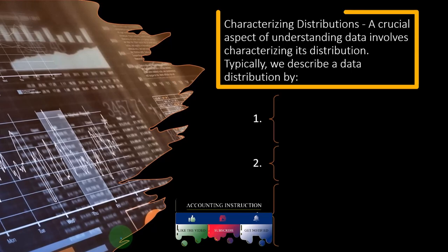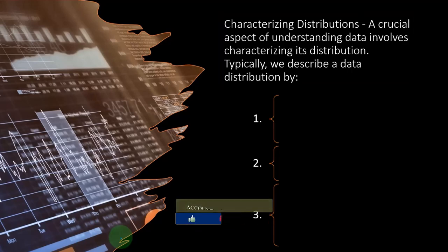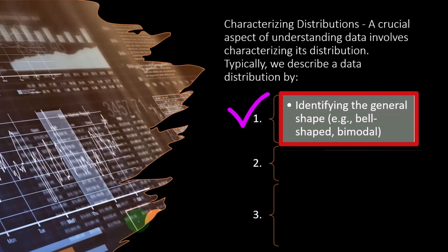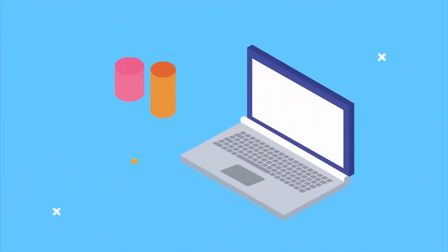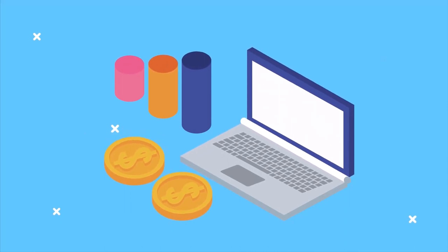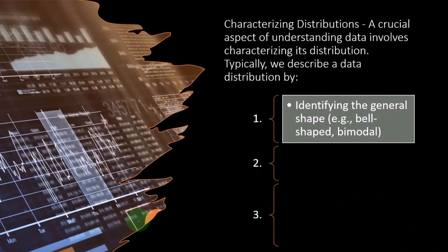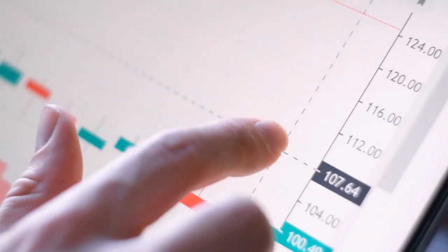All right, so characterizing distribution, a crucial aspect of understanding data involves characterizing its distribution. So typically, we describe a data distribution by identifying the general shape, e.g. bell shape, bimodal, for example. We'll get into more shape types later. But usually, we're thinking about a histogram here, which looks kind of like a bar chart. We'll show a lot of examples of histograms in future presentations.